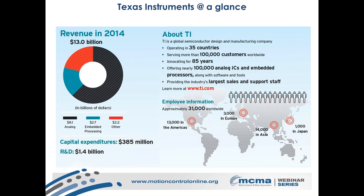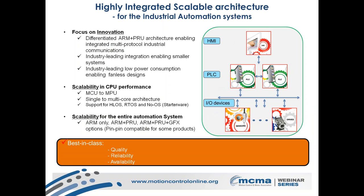Looking at the industrial topology: at the low end, you have field IOs where actual manufacturing occurs — IO sensors and drives being the two key end equipment at the field level. These are connected to the control layer, where we have PLCs and motion control solutions. The number of nodes and quality of service defines the required performance at the control layer. At the operator level, HMI solutions dominate.